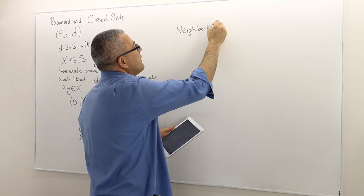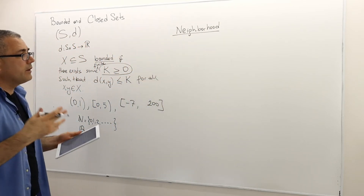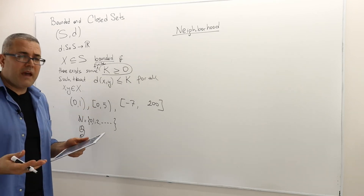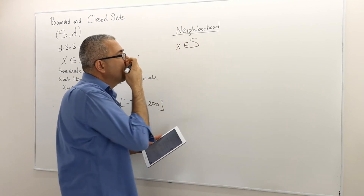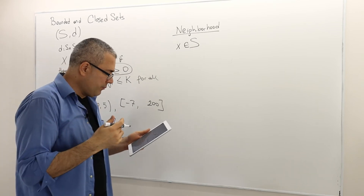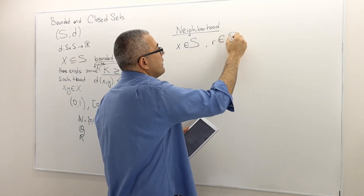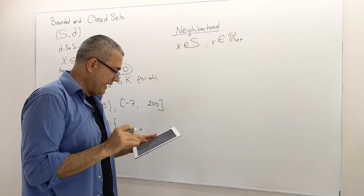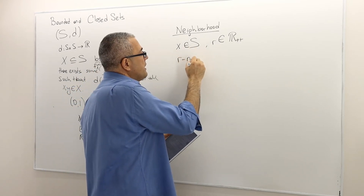The term 'neighborhood' is very similar to how we use it in real life — the people around you. We're going to define it mathematically. Take some element x in a set S — just a point in S — and let r be a positive real number. It can't be zero and it can't be negative.